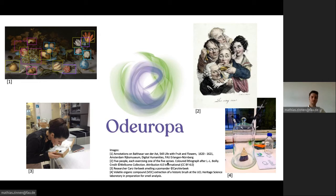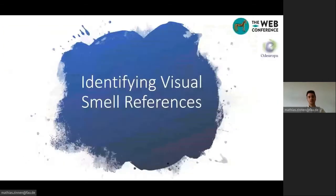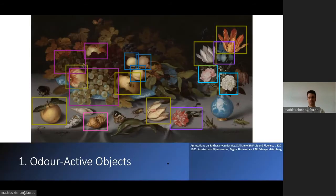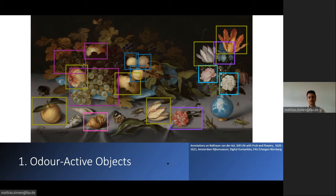So the first thing we need to find out is how smell can be represented in a visual way — we need to identify visual smell references. One thing we came up with is finding odor-active objects. These are objects that either carry a strong smell or emit smells, so for example food, flowers, or animals like insects. These are often depicted in still lives, but we can also detect these kinds of objects in other genres.